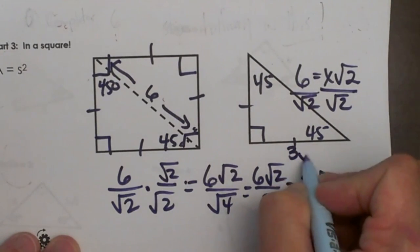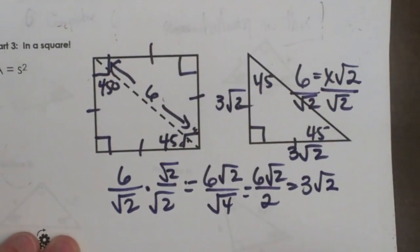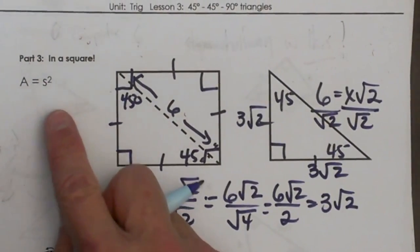So that is the side right here. So I have two legs that match 3√2 and 3√2. Now I can just plug it into my formula.